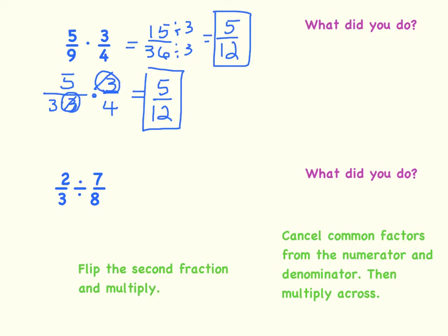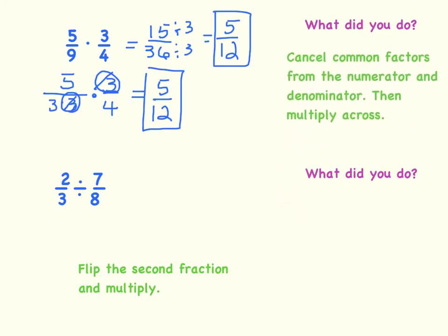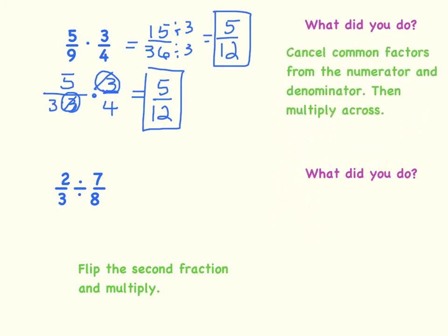I'm showing you the second way because really this is a lot like how we are going to be multiplying and dividing rationals. What did we do? We canceled the common factors from the numerator and the denominator, and then we multiplied across. Now let's go ahead and look at dividing our fractions.